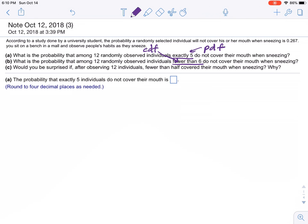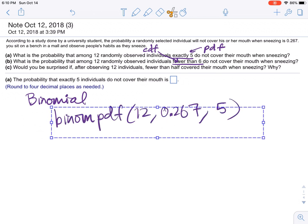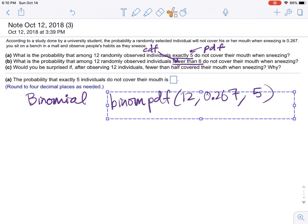So part A, the probability that exactly 5 individuals do not cover their mouth. Well, this is a binomial situation. Because someone either covers their mouth or they don't cover their mouth, it's a constant probability, independent trials, it's a fixed number of trials, 12 times. So, once you realize that it's binomial, you can just do binomial PDF, 12 comma, probability 0.267, and then 5, because we need exactly 5. Let me actually move that over here.